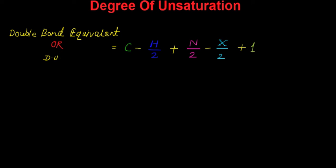Degree of unsaturation, or double bond equivalence, gives information about the presence of double bonds, triple bonds, and rings in an organic compound.